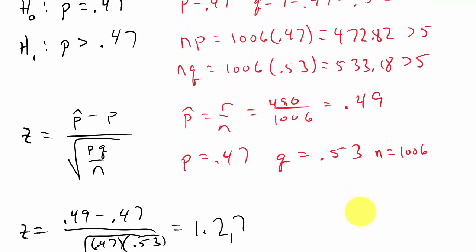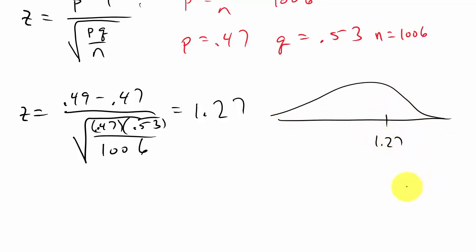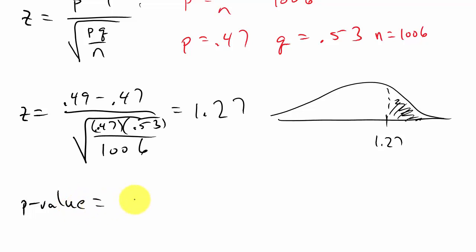We're making the claim that P is larger than 0.47, so this is a right-tailed test. Our Z value is 1.27, and since we're claiming it's larger, we need the area to the right of this value. The P-value is the probability that Z is greater than 1.27.